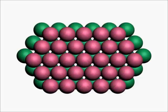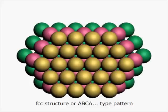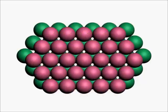On the other hand, if the spheres of the third layer are placed over the triangular voids that form octahedral voids with the first layer, then it is called FCC structure or ABCA type pattern, where the third layer has a completely different alignment.